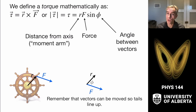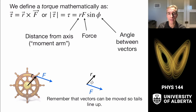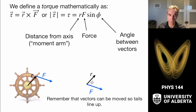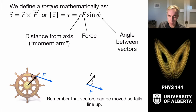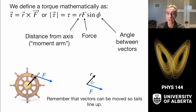We define torque mathematically in vector form as torque equals the moment arm as a vector cross product with the force F. So τ = R × F — order matters. The magnitude of a torque is τ = R F sin(φ), where φ is the angle between those two vectors when slid tail to tail.